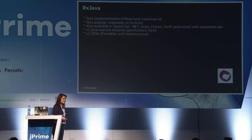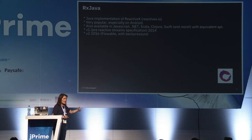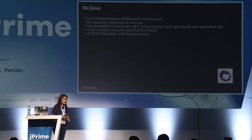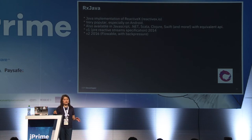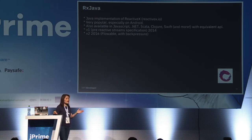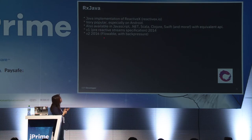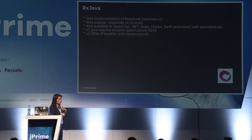Now I'll survey the four libraries. First is RxJava, which came out of ReactiveX — reactivex.io. It's very popular, especially on Android, and also available in JavaScript, .NET, Scala, Clojure, and other languages. It actually came out of Microsoft — someone at Microsoft developed the reactive extension for .NET, then Netflix ported it to Java. It came out in 2014, before the reactive streams specification. The latest version is version 2, which came out in 2016 with Flowable and back pressure support.